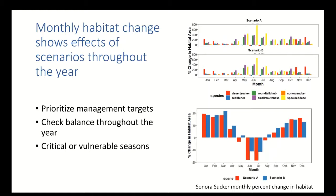Monthly habitat change shows the effects of scenarios throughout the year. We broke fish habitat down by month so it can be used to prioritize management targets — things like spawning season are really important targets that need to be met. We also thought it was important to check the balance of habitat loss and gain throughout the year. For example, a large gain in habitat during spawning season could be canceled out by a loss of habitat during their growing period later in the year. For example, Sonoran suckers show a monthly percent habitat change where, although they have a lot of habitat in the winter and cooler months, during the summer they actually lose a good bit of their habitat.